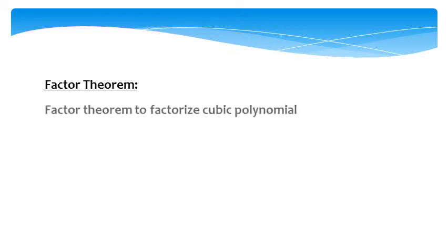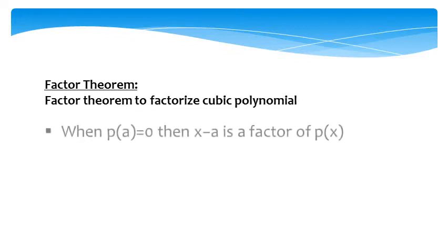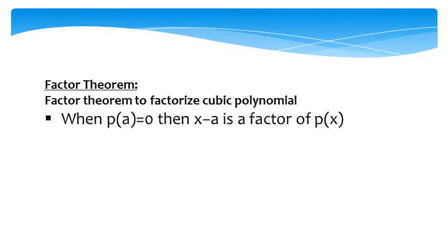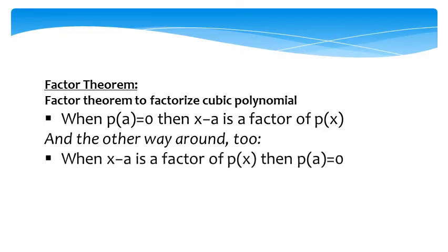Factor theorem: we use the factor theorem to factorize a cubic polynomial. When p(a) equals zero, then (x minus a) is a factor of p(x). Conversely, when (x minus a) is a factor of p(x), then p(a) is equal to zero.